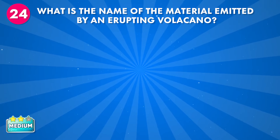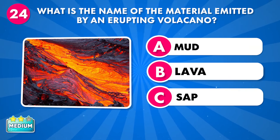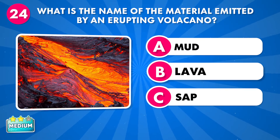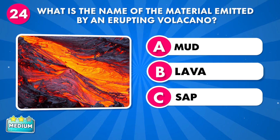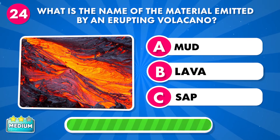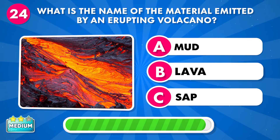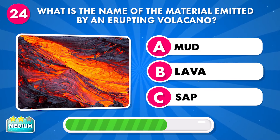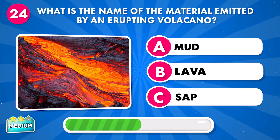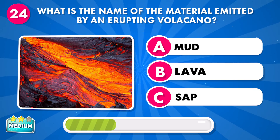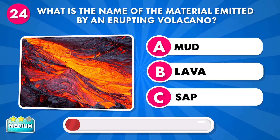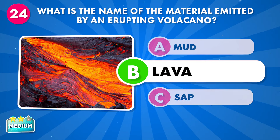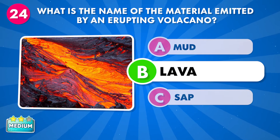What is the name of the material emitted by an erupting volcano? A: mud, B: lava, C: a sap. It's lava.